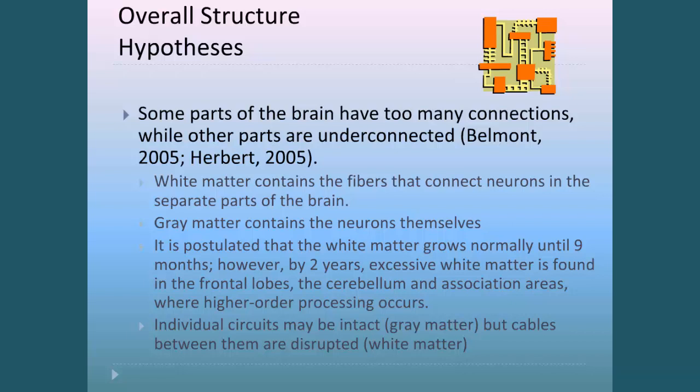It's postulated that the white matter grows pretty normally until about nine months, not in all children but in many. However, by two years, excessive white matter is found in several areas of the brain. Those areas are the frontal lobe, which is responsible for executive functioning; the cerebellum, which is responsible for sensory issues and alerting kinds of issues, sleep regulation; and associated areas such as the corpus callosum, which tells the left brain what the right brain is doing and vice versa. So the individual circuits may be intact, but the cables between them are not.